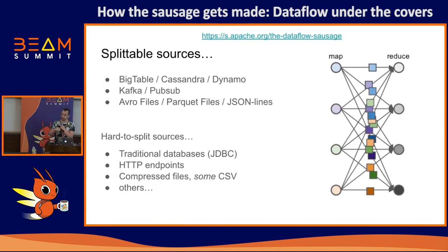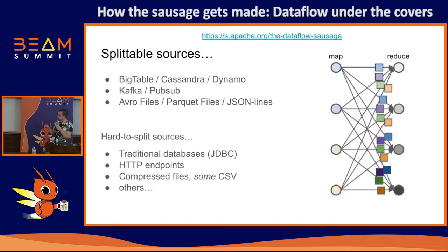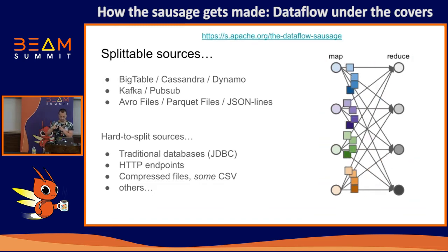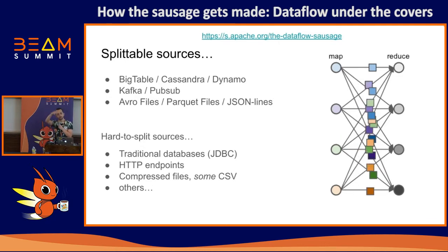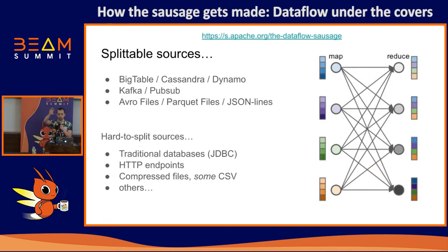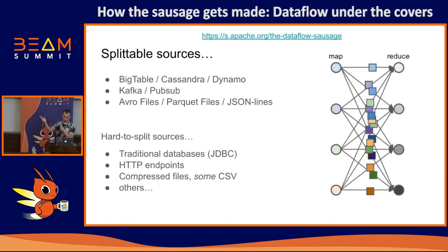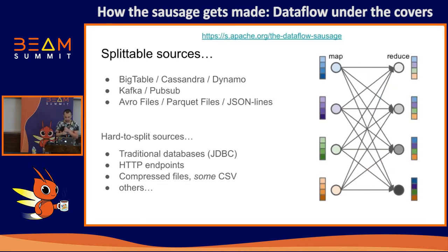So the first tip is: when defining a pipeline, be conscious of what kind of source you're reading. The parallelism of your pipeline depends on your source. After a group-by-key, I'll talk about what happens to parallelism in a bit.